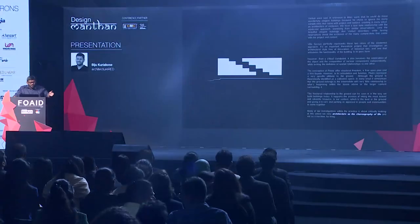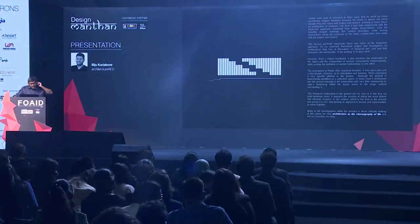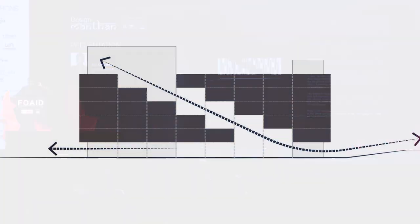I'll start with Venturi. Venturi once said, looking at Mies's work, that Mies could do those beautiful elegant buildings because he chose to ignore the many complexities that came with the project or the context within which he practiced. We, as a practice, have a love-hate relationship with this modernist approach, primarily for the reasons Venturi outlined.